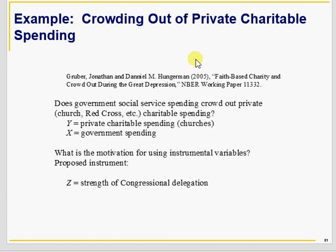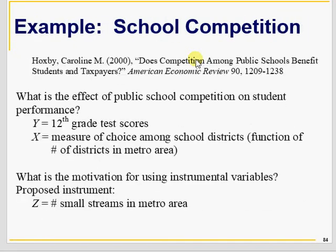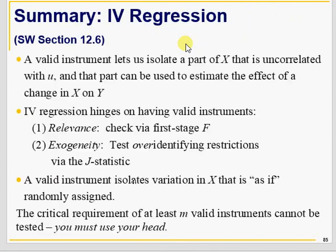Similarly, you can study crowding out of private charitable spending — whether when government spends more it leads to crowding out of private charity. You can read the NBER working paper on this. Another example examines whether school competition among public schools benefits students and taxpayers, using small streams in metro areas as instruments, because small streams geographically determine the boundaries of those metro areas.